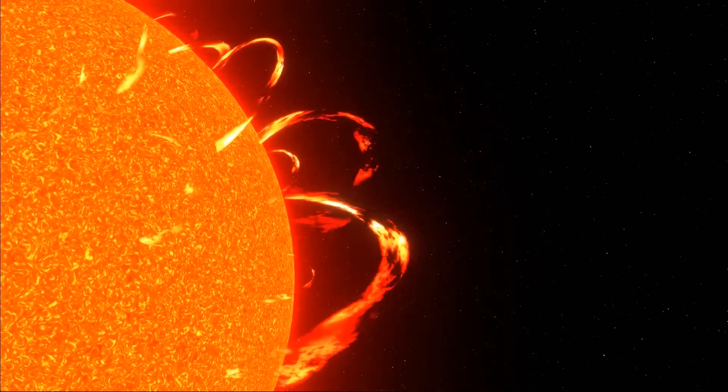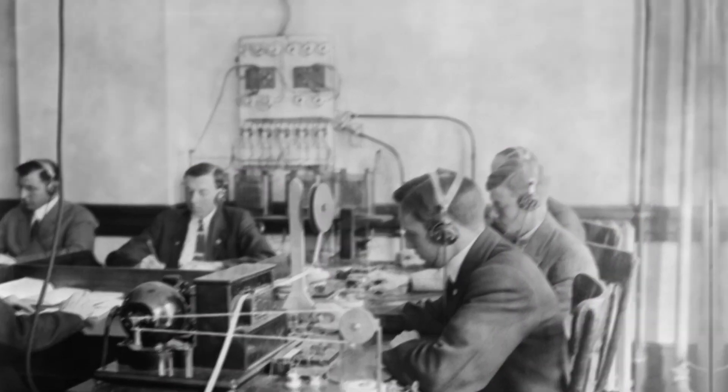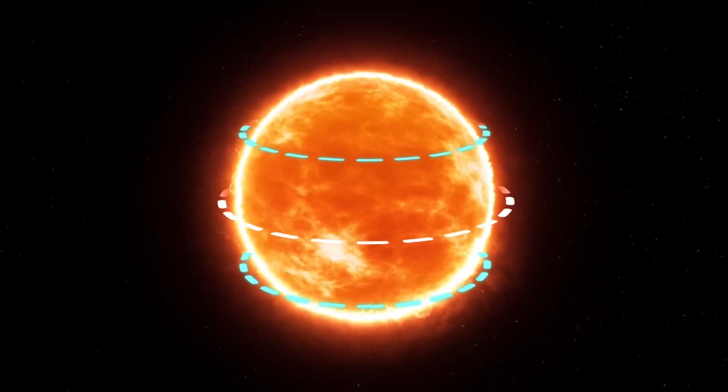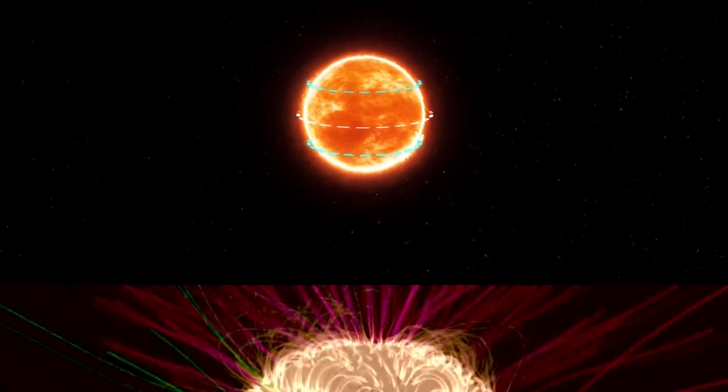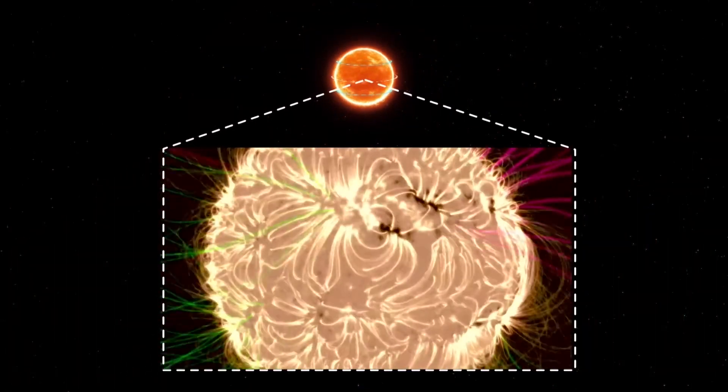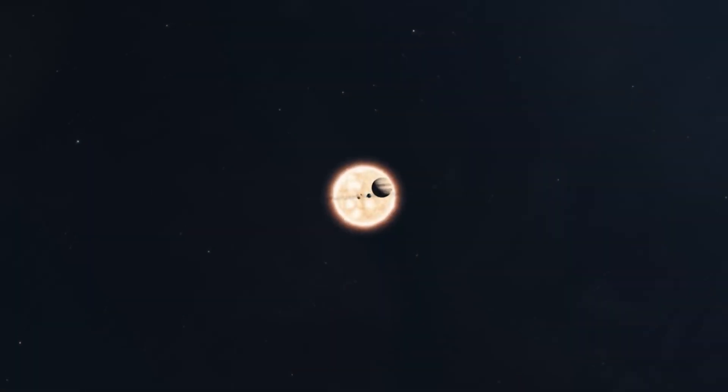The sun's magnetic flip is a complex and fascinating process that scientists are only beginning to fully understand thanks to cutting-edge research and advanced 3D simulations. At the heart of this phenomenon is the sun's internal dynamo, a powerful generator driven by the movement of plasma within its core. As the sun rotates, hot plasma churns and twists, creating magnetic fields that grow stronger and more turbulent over time.